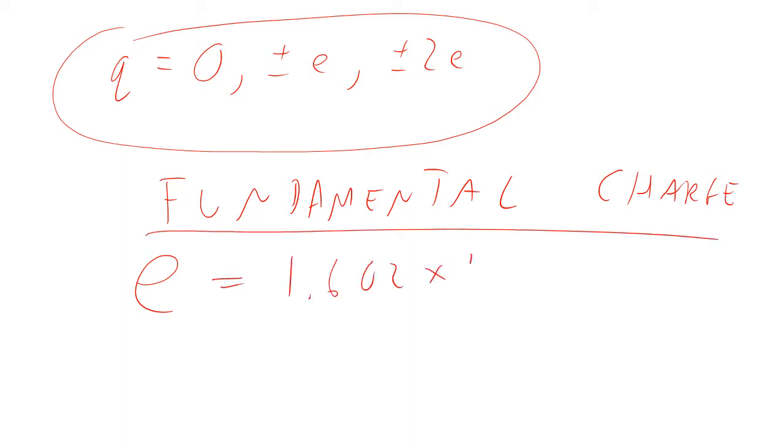1.602 times 10 to the minus 19 coulombs. You should know that. This should be something that's stuck in your brain, just like the speed of light, which is three times 10 to the eighth meters per second. That's one of these absolute constants that you just ought to know.